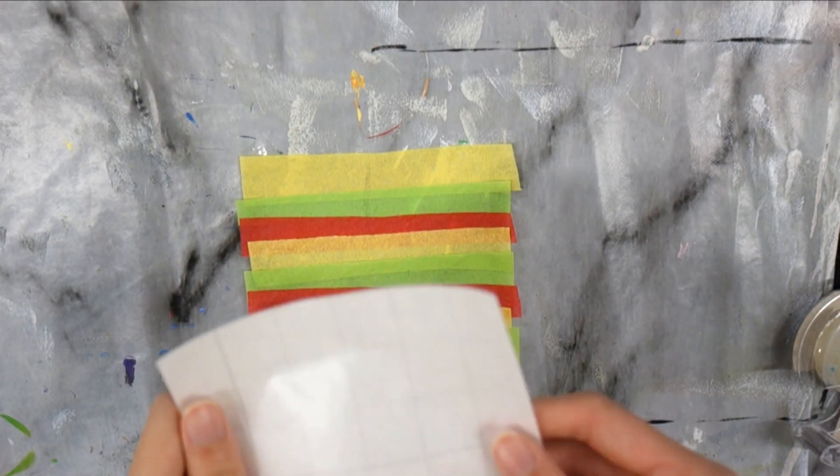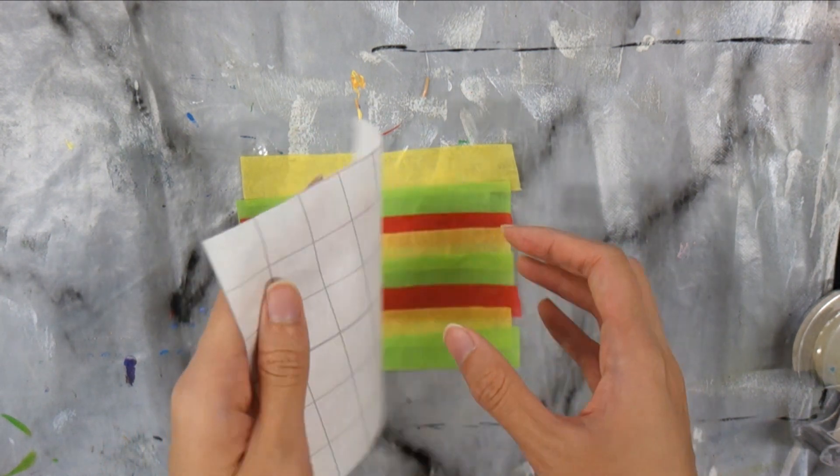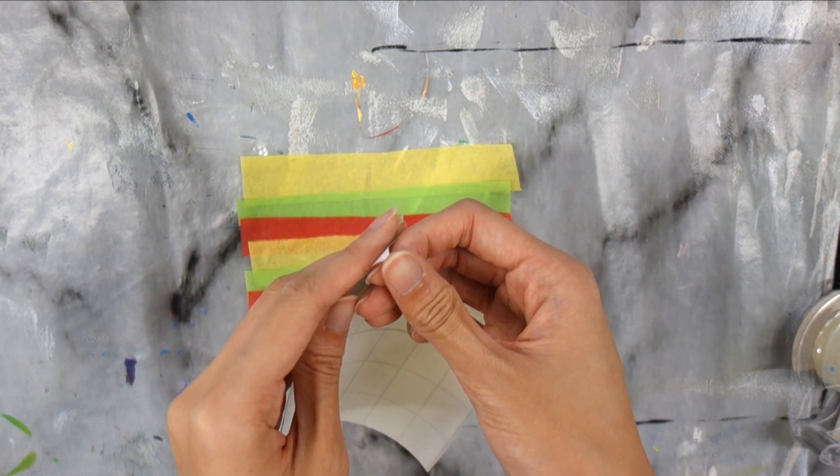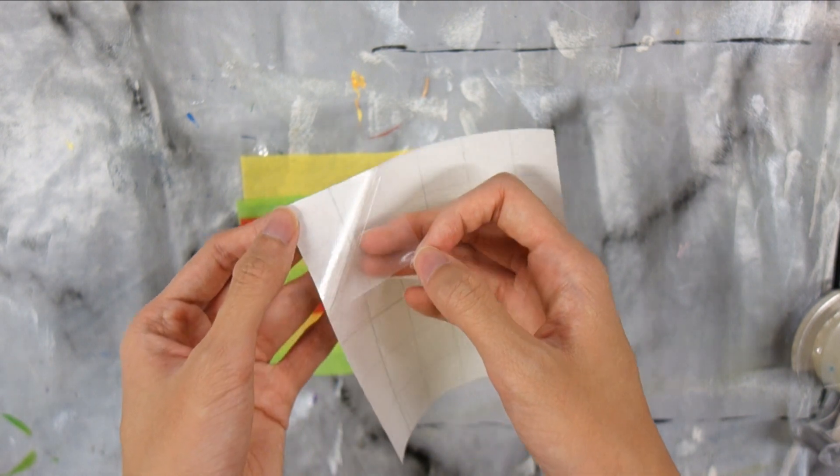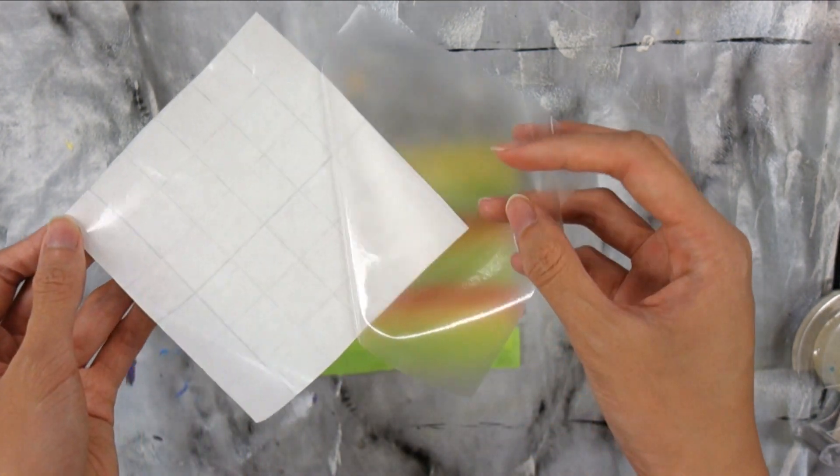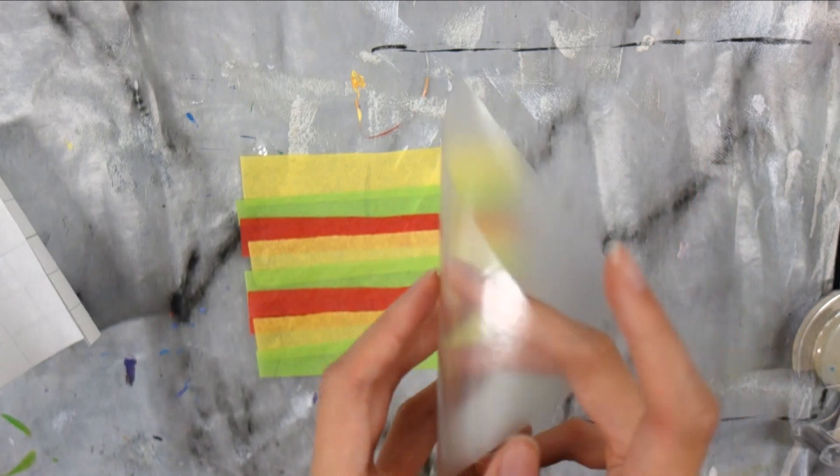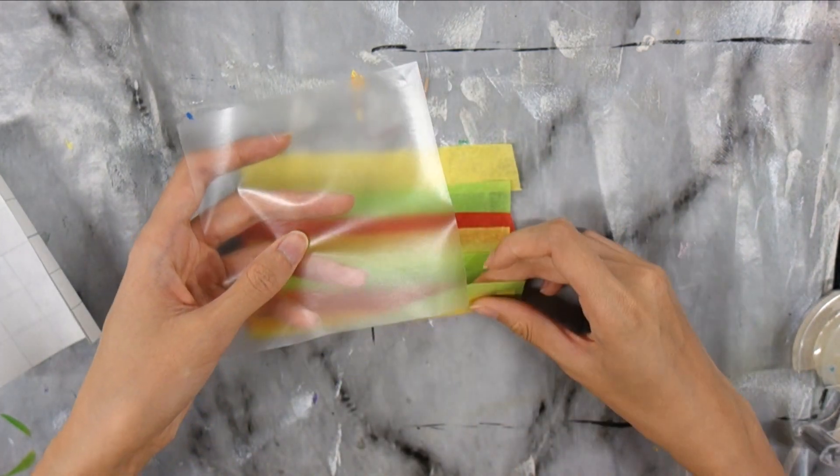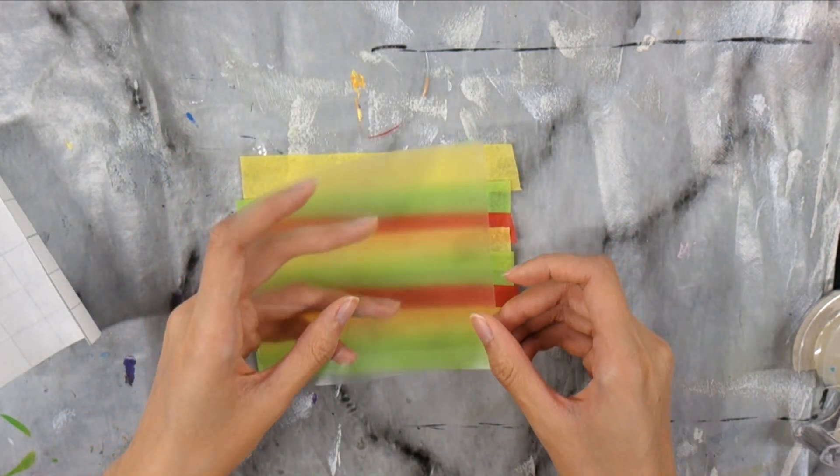Peel off the protective backing off the second contact paper square. Try your best to line it up with the square on the bottom.